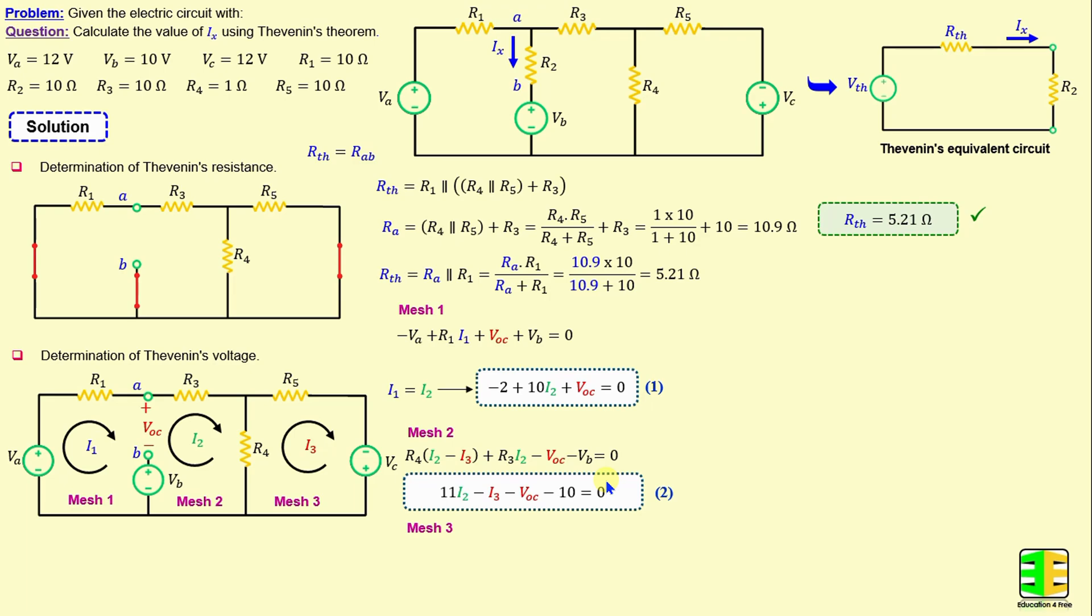Now, by applying Kirchhoff's voltage law in mesh 3, we can write R4 times (I3 minus I2) plus R5 times I3 minus VOC equals 0. If we replace the resistors with their numerical values, we obtain 11 times I3 minus I2 minus 12 equals 0.